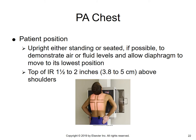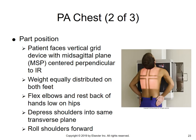For the PA chest, position is upright — either standing or seated if possible. It's used to demonstrate air or fluid levels and allows the diaphragm to move to its lower position. The top of the IR is about one and a half to two inches above the shoulders. You cannot clip the apices and you cannot clip the costophrenic angles. The patient faces the vertical grid device with the mid-sagittal plane centered perpendicular to the IR, weight equally distributed on both feet. The patient's elbows are flexed and the back of the hands rest low on the hips. Depress shoulders into the same transverse plane and roll the shoulders forward, which gets the scapulae more out of the lung fields.